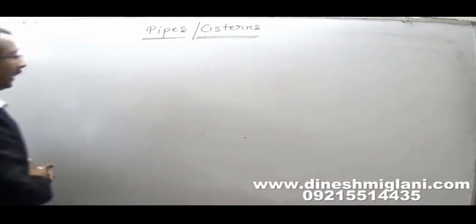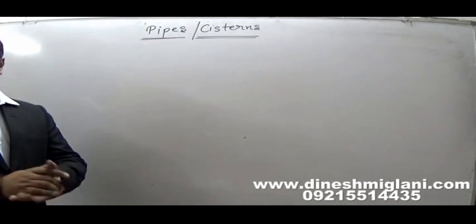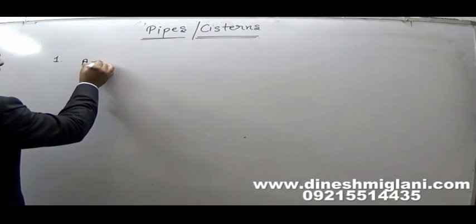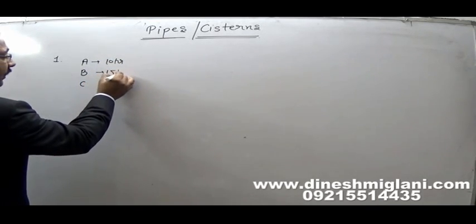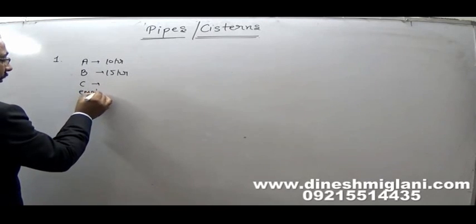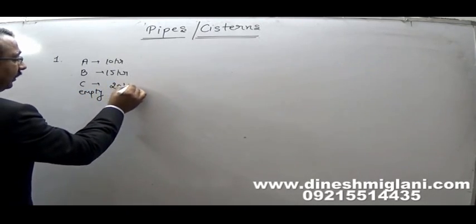When we talk about Pipes and Taps, we have primarily two types of pipes: the first one, those who fill a tank, and the second one, those who empty it. Suppose it is given that there are three taps A, B and C. A can fill the tank in 10 hours, B can fill the tank in 15 hours, and C tap is going to empty — it can empty the tank in 20 hours.